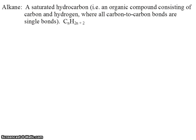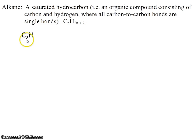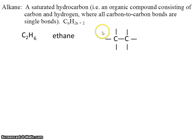An alkane is a saturated hydrocarbon — that is, an organic compound consisting of carbon and hydrogen where all carbon-to-carbon bonds are single bonds. It will follow this template: CnH2n+2. For example, in this case n is 2, meaning 2n+2 would be 6. This molecule is called ethane — we saw that on the previous slide — and it has two carbons, with the rest assumed to be hydrogens.